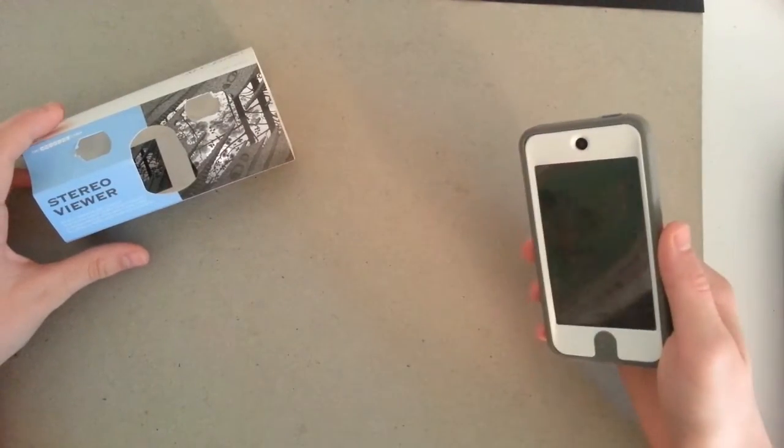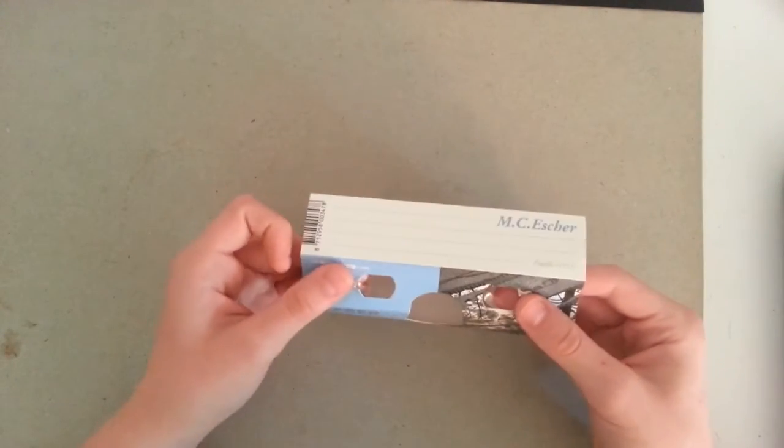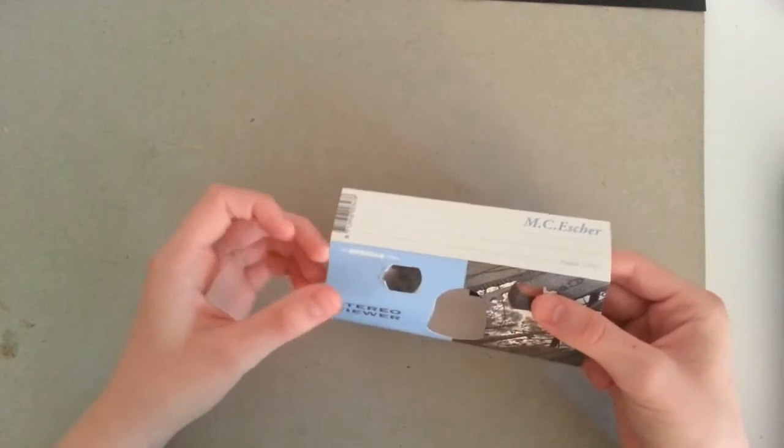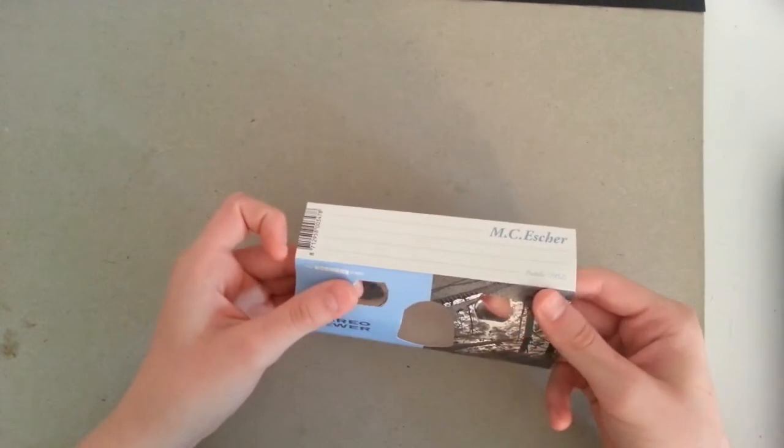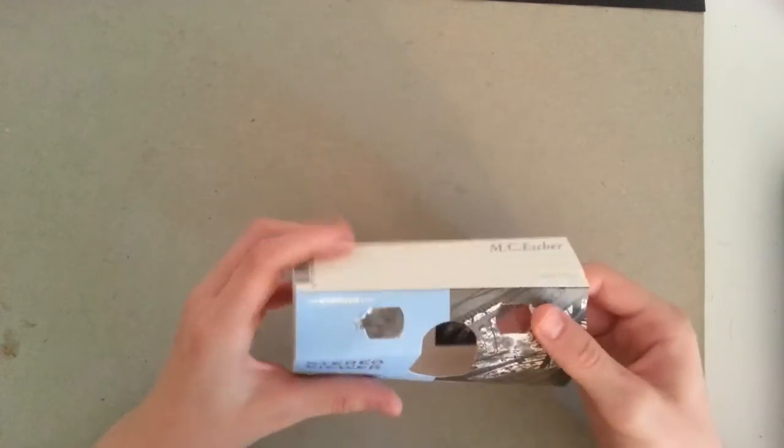So what you want to do is just set off your iDevice to the side for a second and focus on the stereo viewer. And I'll leave a link in the description where you'll be able to pick one of these up. They are pretty easy to find. So, let's get right to it.